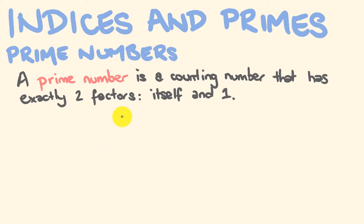Another prime number is 2, and 2 is a pretty special prime number because it's the only even prime number. The only factors that go into 2 are 2 and 1, and this makes it a prime number. For every other even number, 1 and the number itself will go into it, but also the number 2 will go into it. So 2 is the only even number that is a prime number, as we'll see when we look at composite numbers.